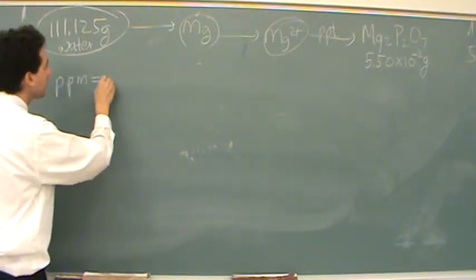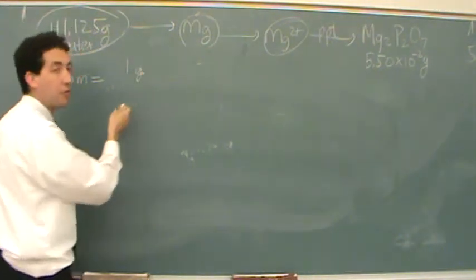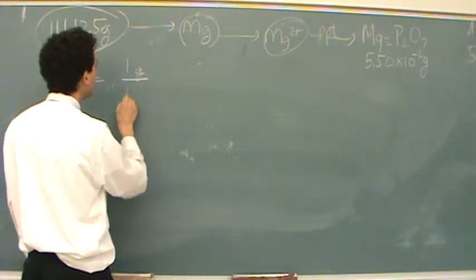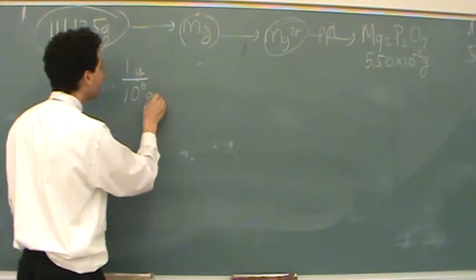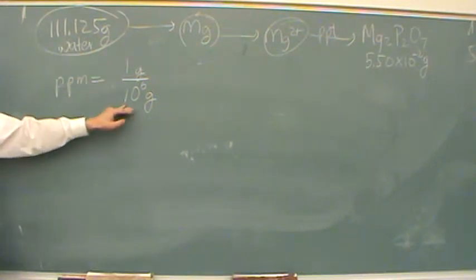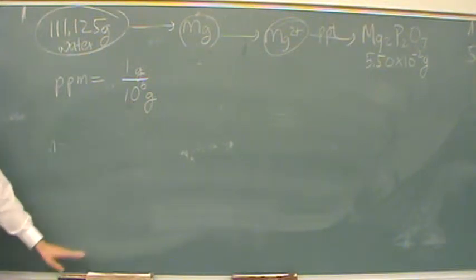Parts per million means there's one gram of what you're interested in, this is the magnesium, for every million grams of the whole solution. So that's what parts per million. If it's parts per billion, it'd be one gram for every billion grams. This is a common unit for environmental purposes, typically.